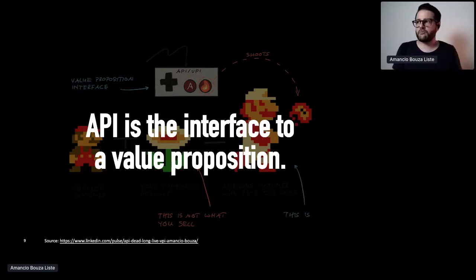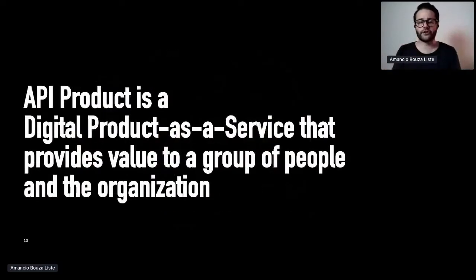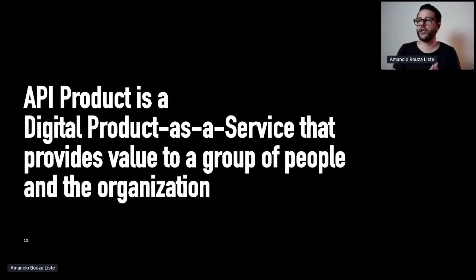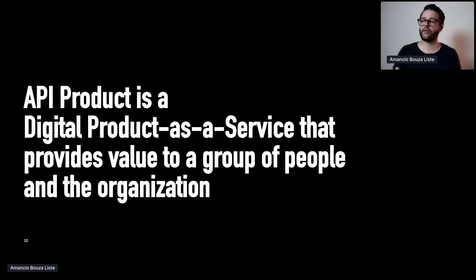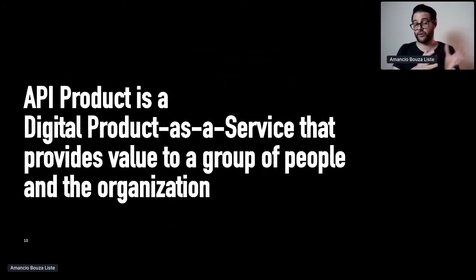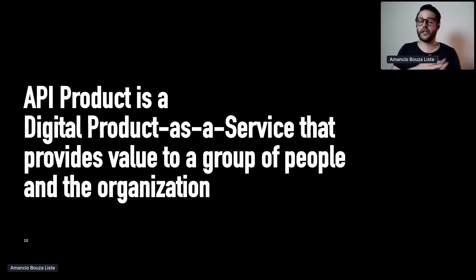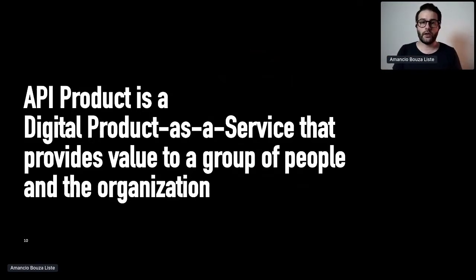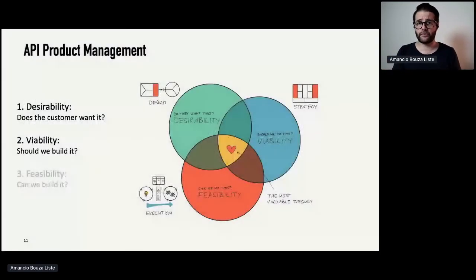You might ask: what is an API product then, if it's just an interface to a value proposition? It's a complete package. An API product is a digital product offered as a service — you can't just package an API and install it somewhere; you really have to provide it as a service with SLAs, availability, and all these kinds of things. It also needs to provide value to a certain group of people — your customers. But don't forget: it also needs to provide value to the organization. If it doesn't, then it's just a waste of money.